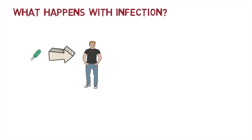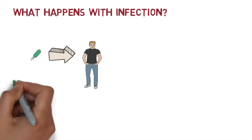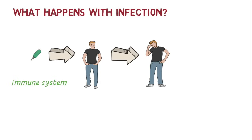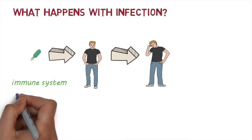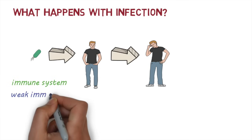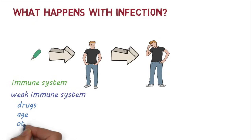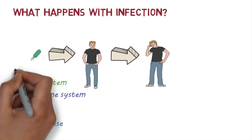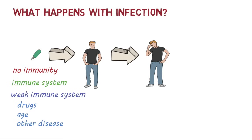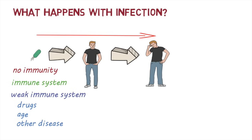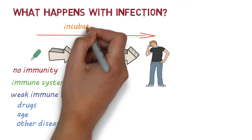When an organism enters the body, some people fight it off with their immune system, while others go on to develop disease. People are likely to develop disease if they have weakened immune systems — this could be due to drugs, age, or other disease. They're also more likely to develop disease if they're not immune to it, for example if they haven't had the disease before or haven't been vaccinated.